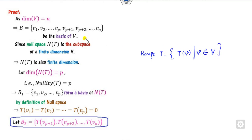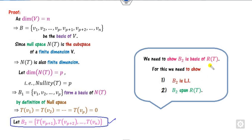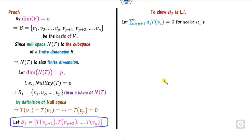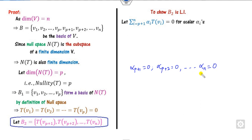We consider elements from V and form the set B2 using their images under T, starting from index P+1 to N. Our target is to prove that B2 is a basis of the range space. First, we prove linear independence: multiply by scalars and show that alpha_{P+1}, alpha_{P+2}, ..., alpha_N are all 0.